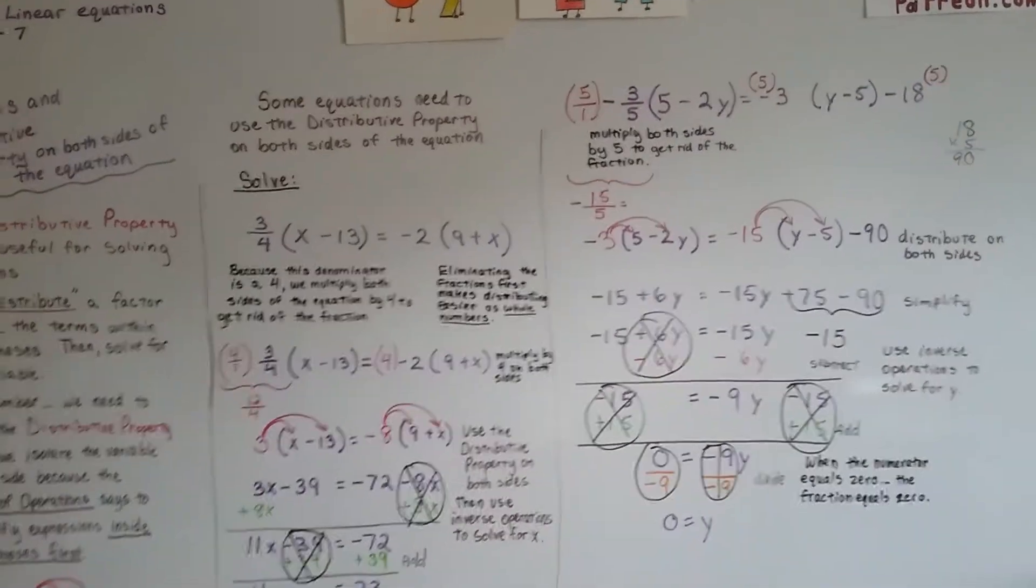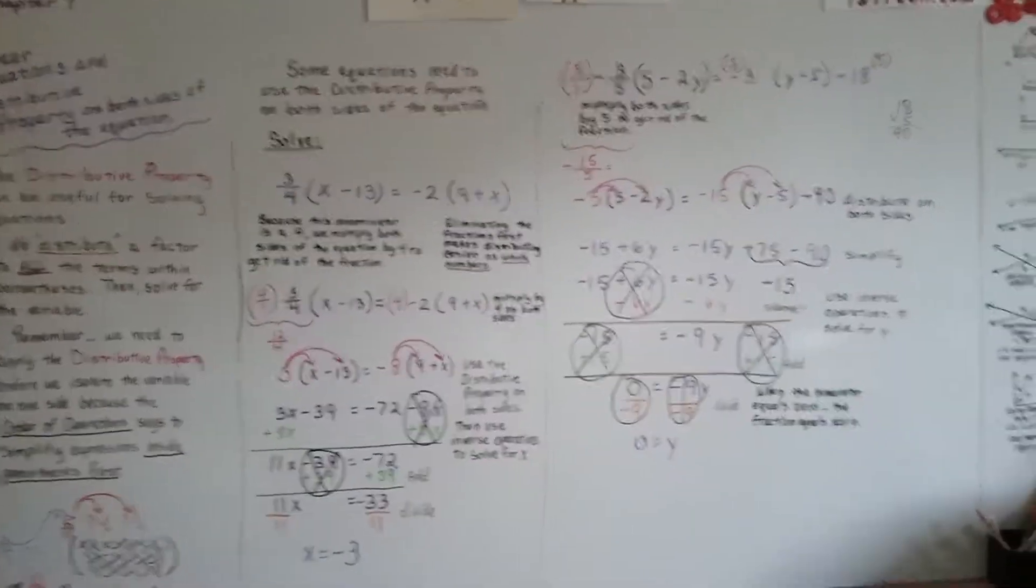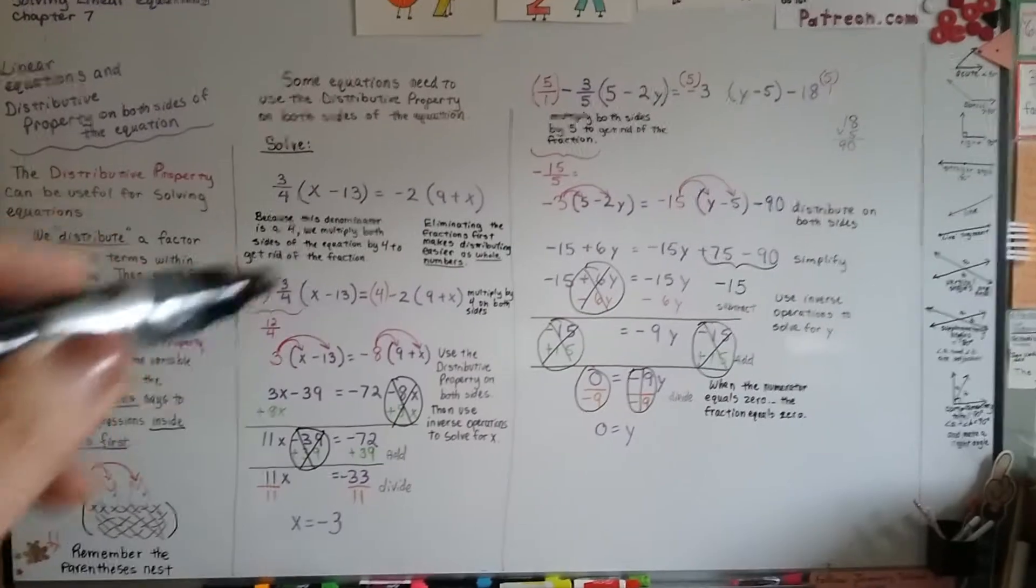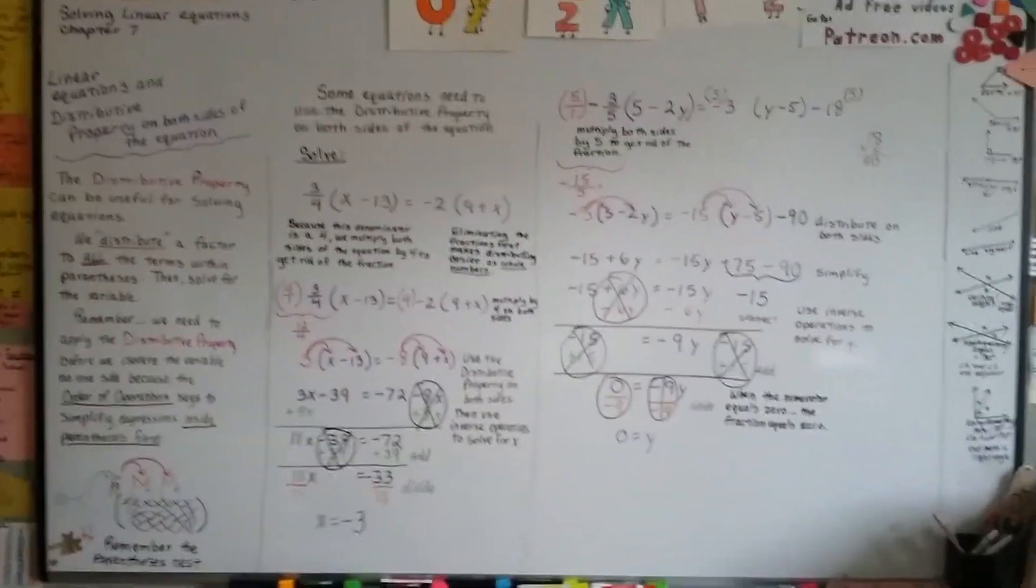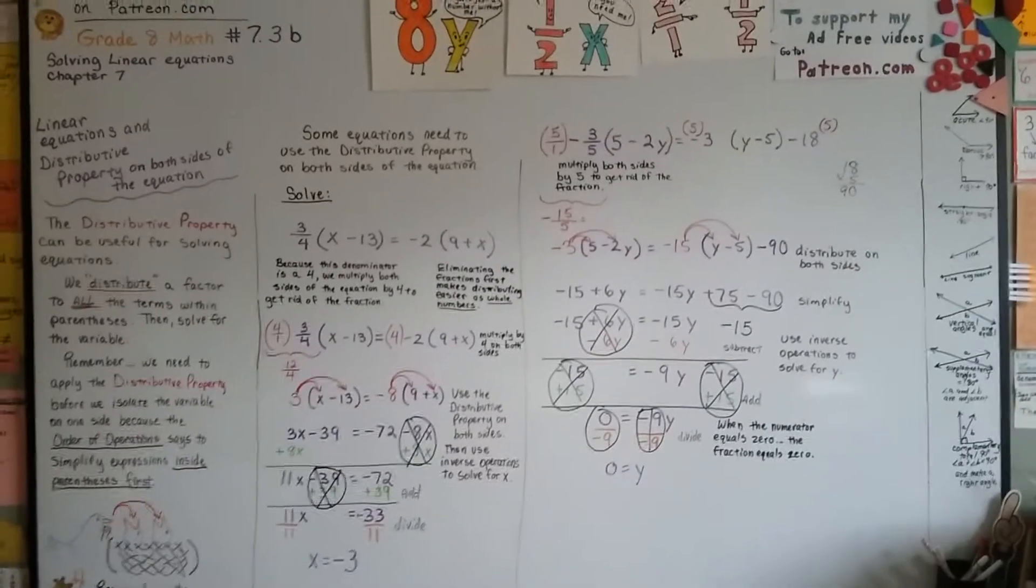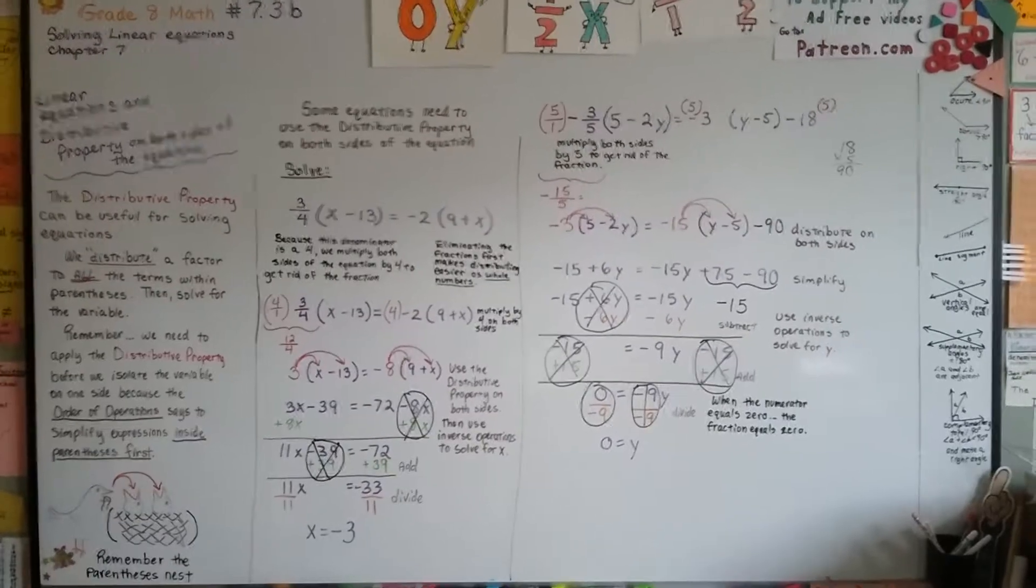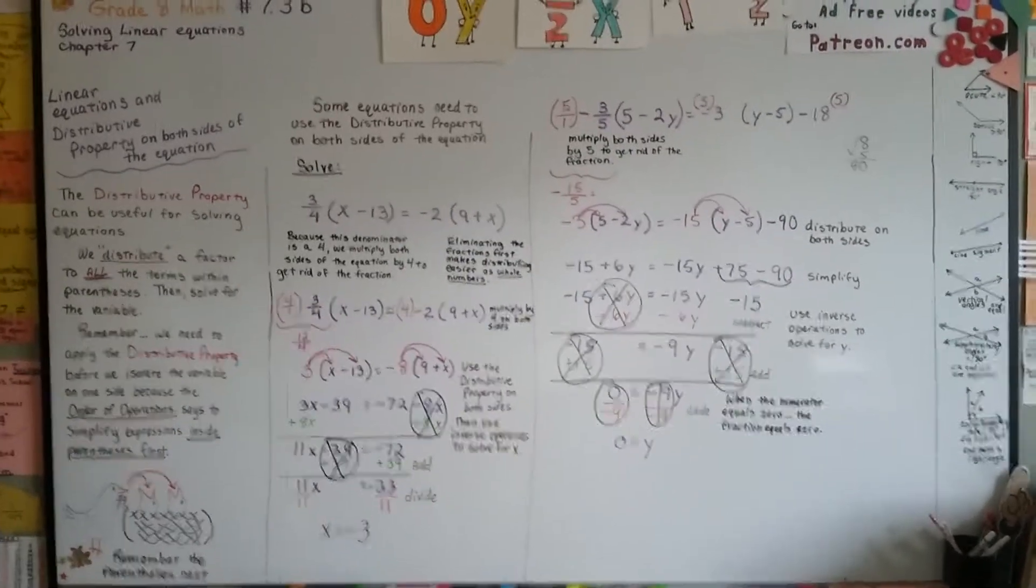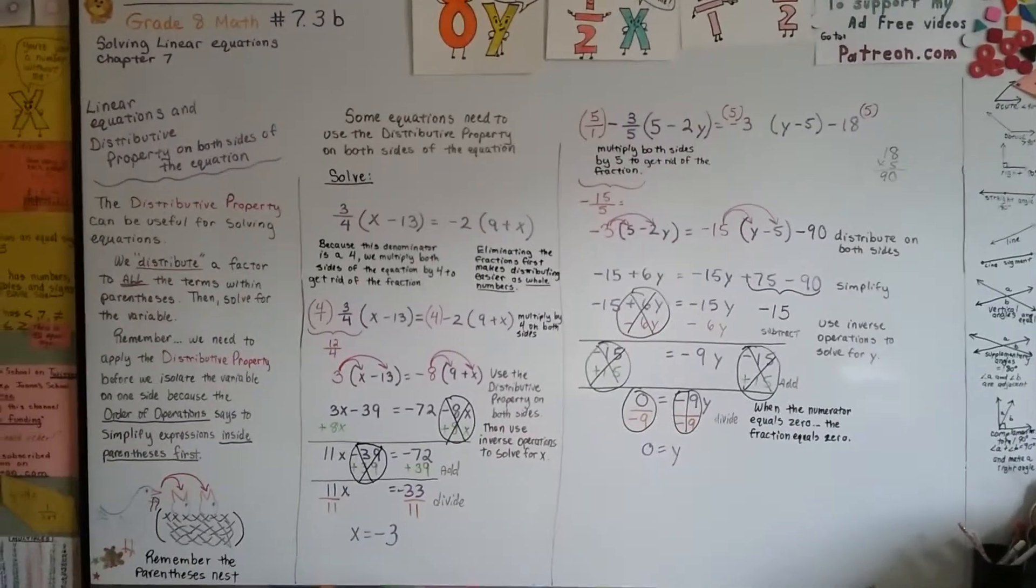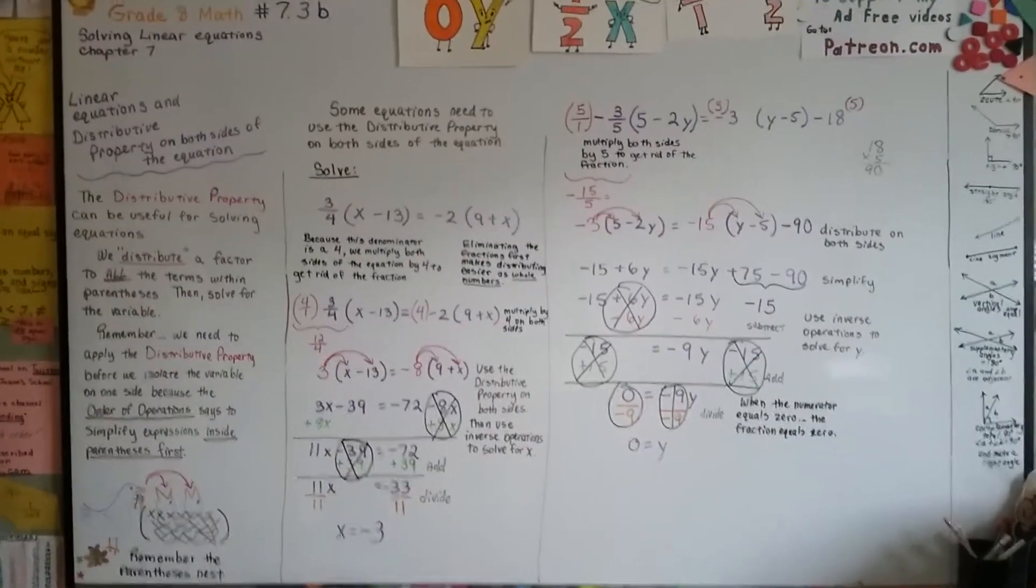That was using the distributive property on both sides of the equation, eliminating fractions by multiplying by the denominator on both sides. And it's dealing with rational numbers with linear equations. We're going to continue on talking about linear equations in the next video. I hope this was helpful. We're making it. We're getting farther and farther along. And I hope you're following okay. And I'll see you next video. Bye bye.